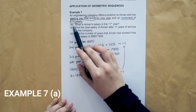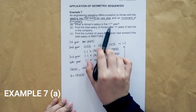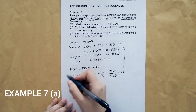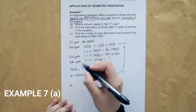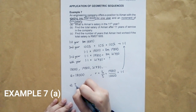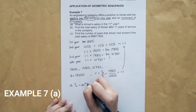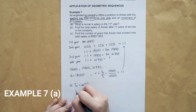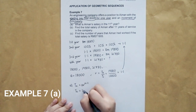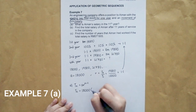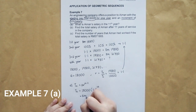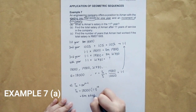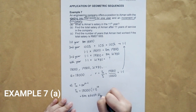For Question A, what is Aiman's salary in the 11th year? We need to find T11 using the formula Tn = a × r^(n−1). Substituting the values: T11 = 18,000 × 1.1^(11−1) = 18,000 × 1.1^10. The answer is RM46,687.36.